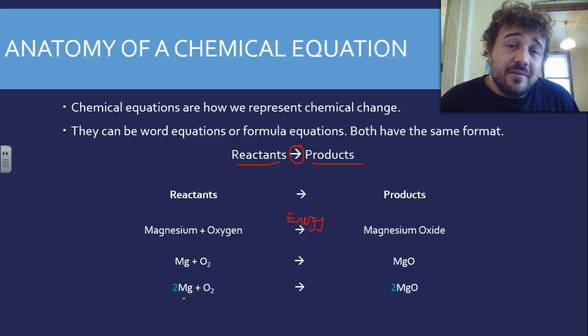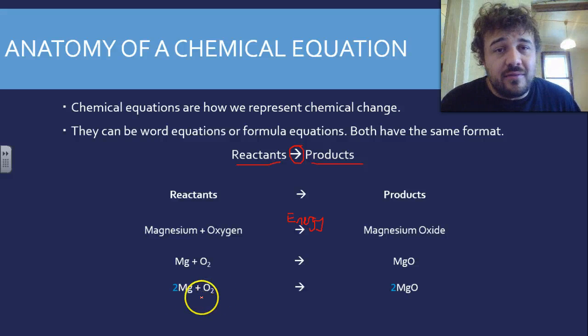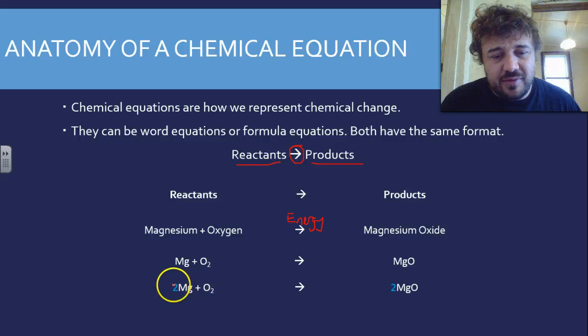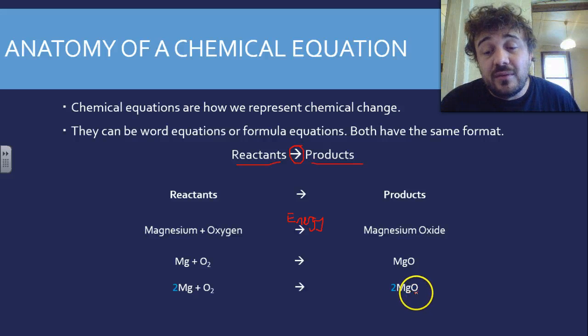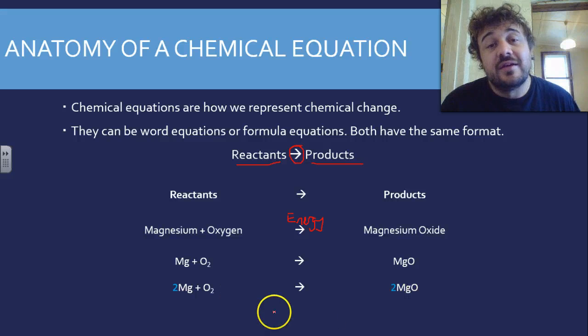We put two magnesium atoms for every oxygen molecule. We put this two at the front, and we go O2 here, which gives us two magnesium oxides. How many magnesiums do we have on this side now? Two magnesiums. How many oxygens?